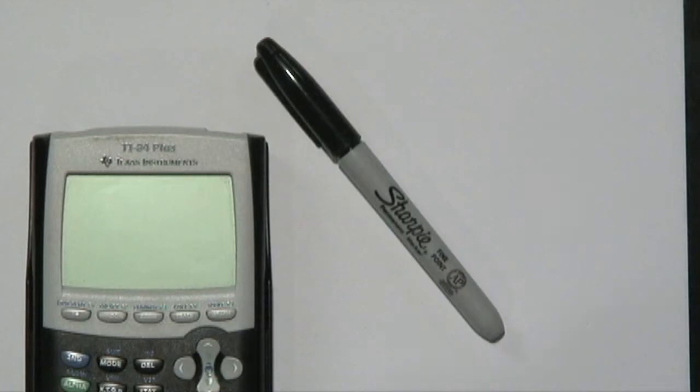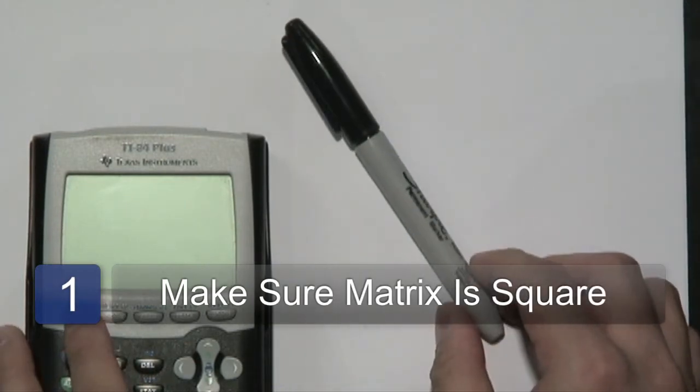So here we go. One thing I want to emphasize is that to find the inverse of a matrix, you want to assume, of course, that the matrix is square, as in the number of rows and columns are the same. It does not work for non-square matrices.